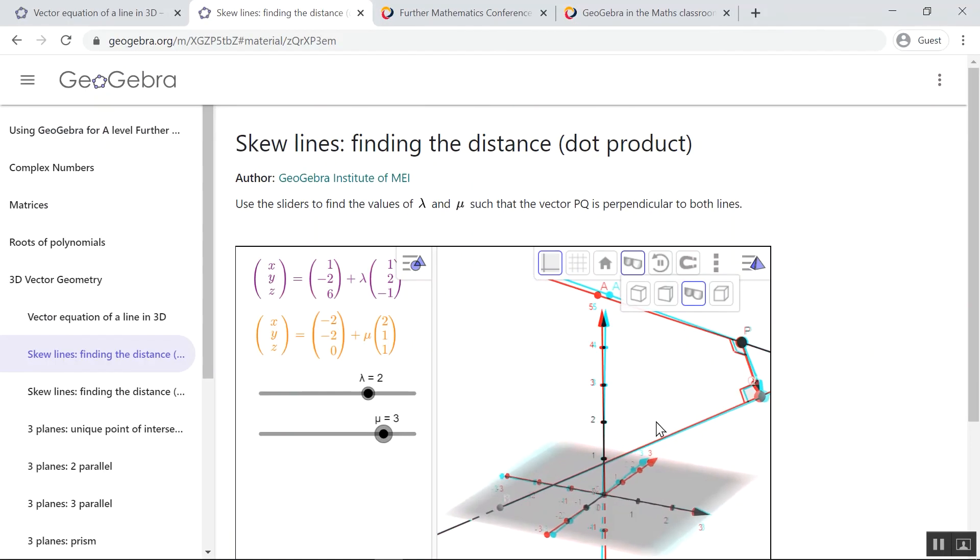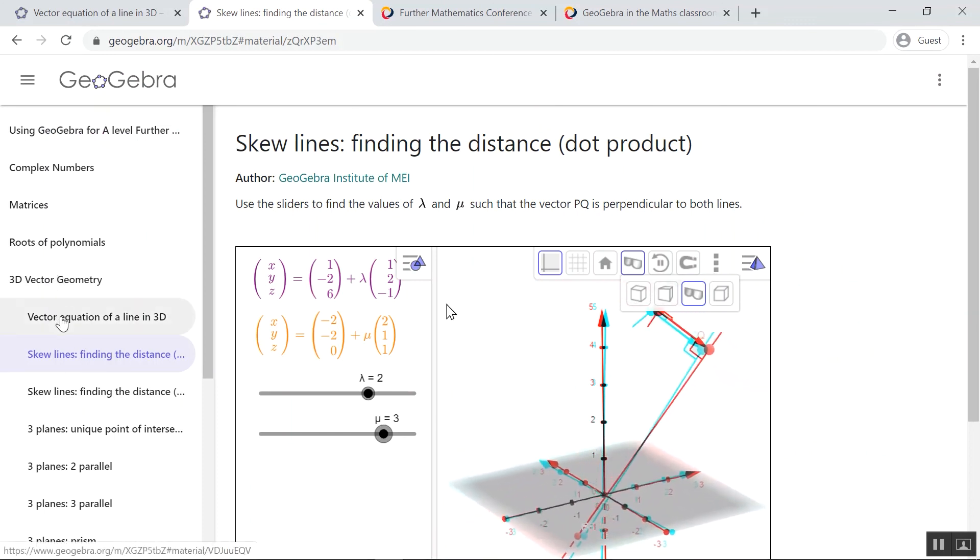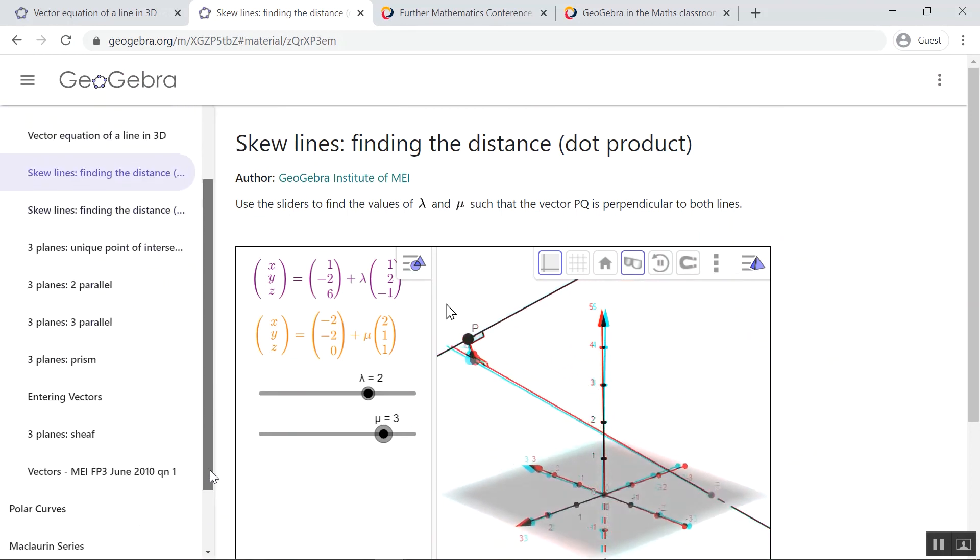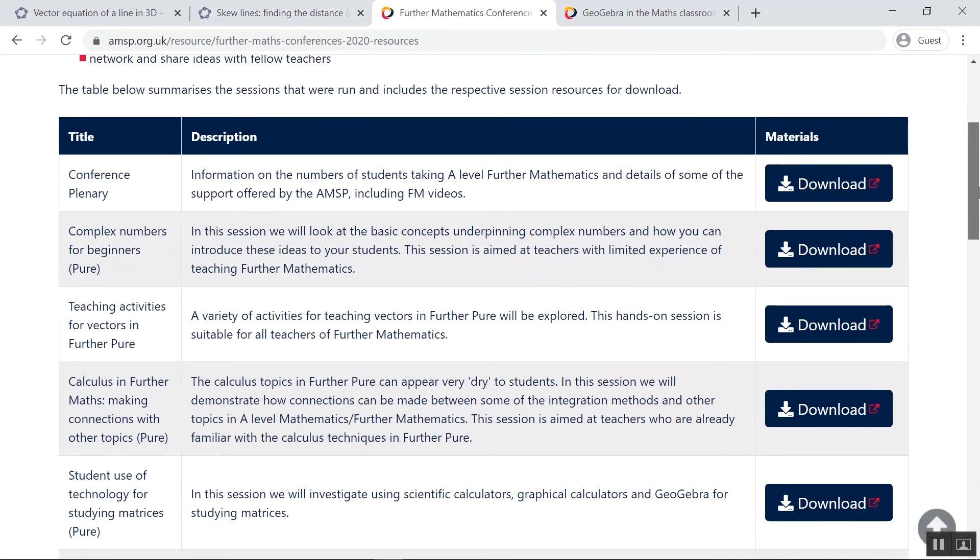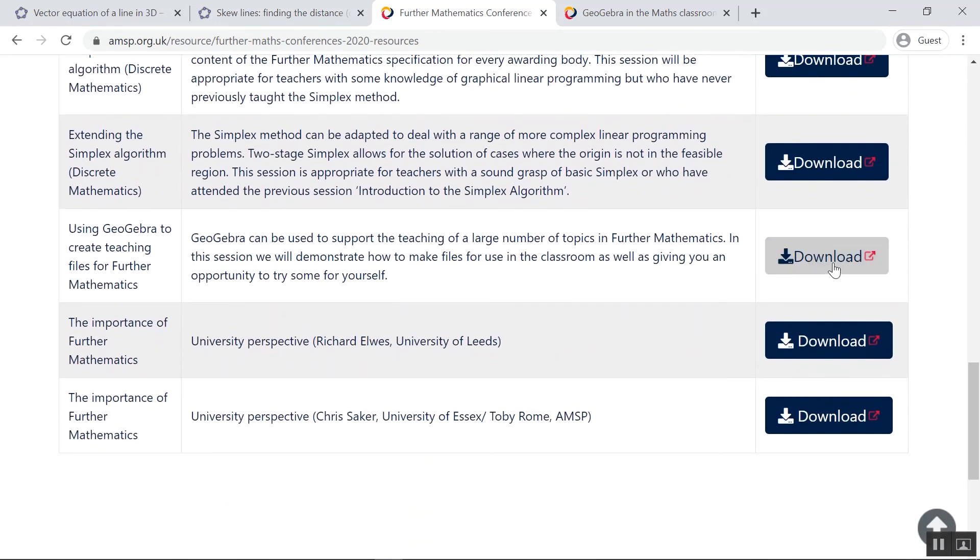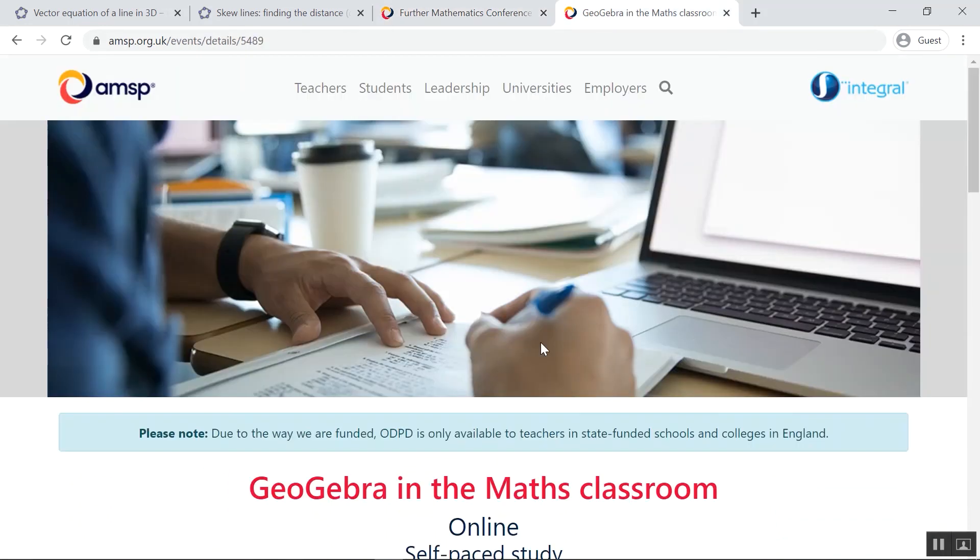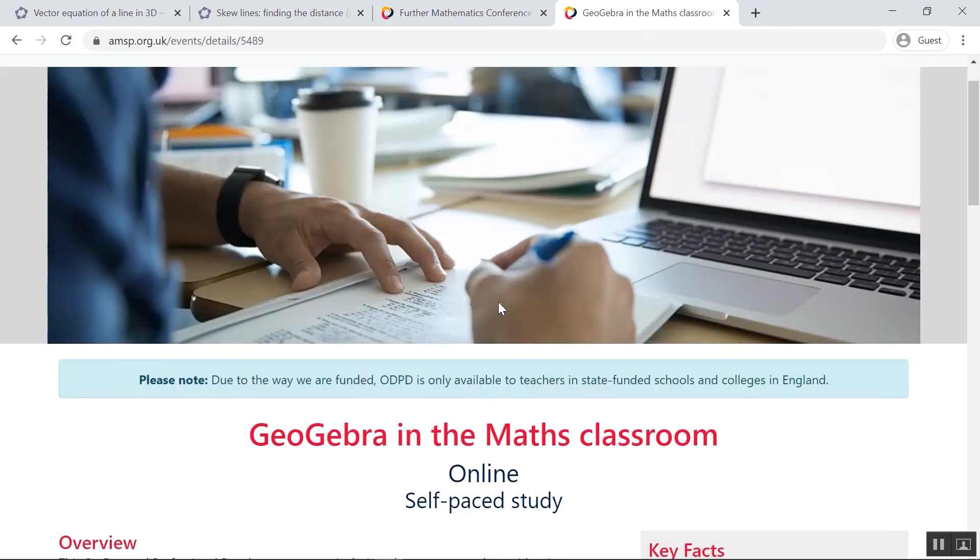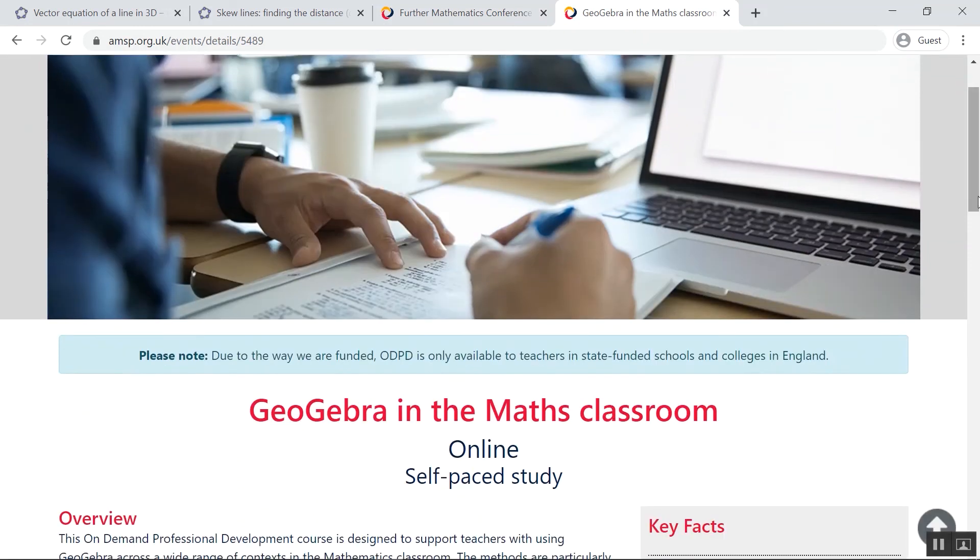So all the files are in the 3D vector geometry section of the GeoGebra book for further maths, which there's a link to in the pack. If you want more help with using GeoGebra for further maths, you'll see in these further maths conference resources session there was a whole session on using GeoGebra for further maths. If you look at the materials there, there's some tips to get you started and there's also an AMSP on demand professional development course, GeoGebra in the maths classroom, which is a full self-study course in using GeoGebra for GCSE and A-level maths. I hope that's been useful.